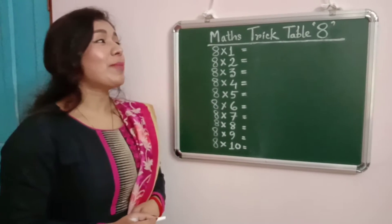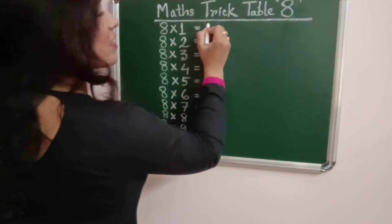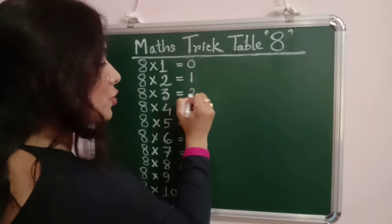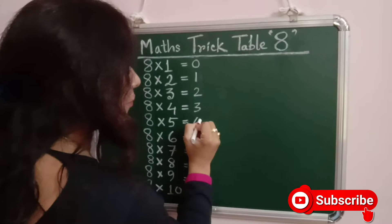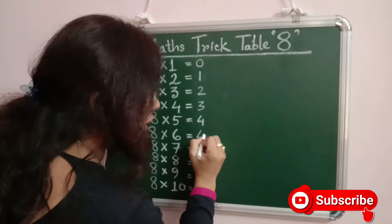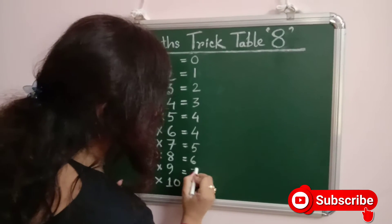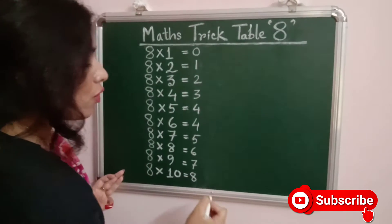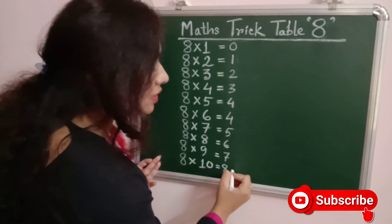This is the math strategy trick of 8. At first we can write 0, 1, 2, 3, 4. After that we can write again 4, 5, 6, 7, 8. Now we can write 2's multiples from here.